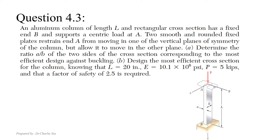Let us go through one example and see how to identify the effective length and apply the critical load formula to solve the problem. For this question, we have a fixed end at B and a round fixed plate restraint at end A. For end A, there are two types of conditions depending on how the column bends, which we will discuss further.